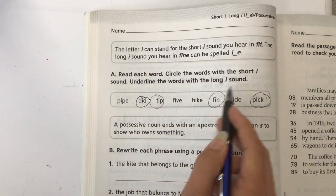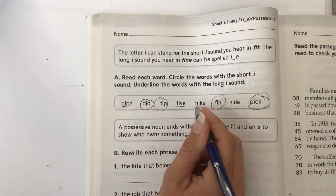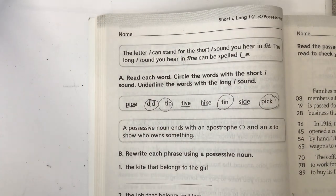So underline the words with a long I: pipe, five, hike, and side. So I like to do one sound at a time.